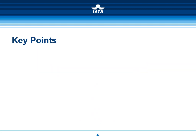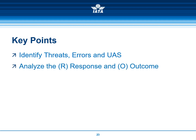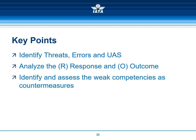The explanations provided in this tutorial are the basis for the accident-incident report analysis. Remember the following key points: identify threats, errors, and undesired aircraft states; analyze the response and outcome; identify and assess the weak competencies as countermeasures. If you have any doubt, refer to the content of this course and the guidance for analysts.